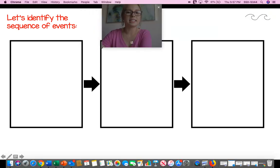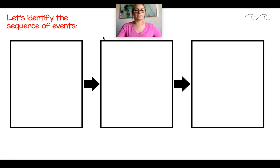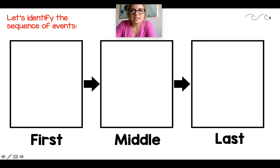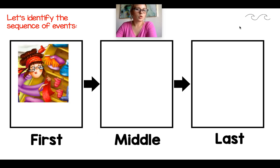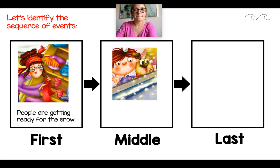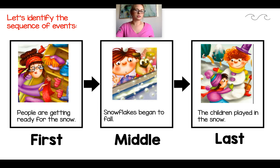The last thing we're going to talk about is the sequence of events — first, middle, last. In the first box: what happened first in the story? All the people were getting ready for the snow. What happened in the middle? Snowflakes began to fall. What happened last? The children played in the snow, and they didn't have school because they were snowed in — they had a snow day.